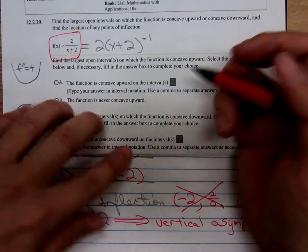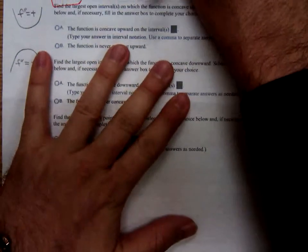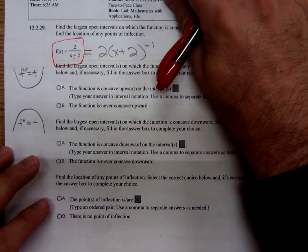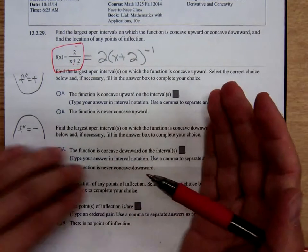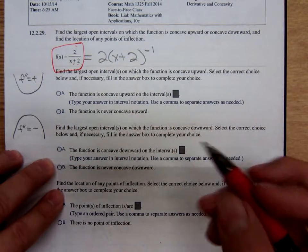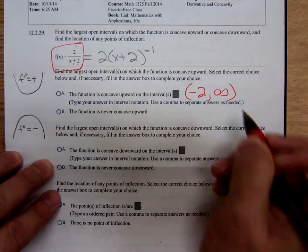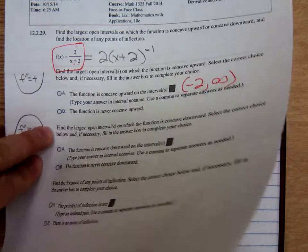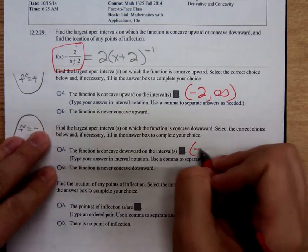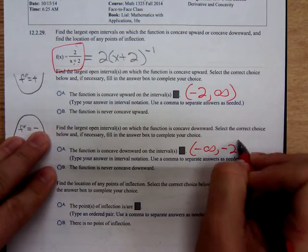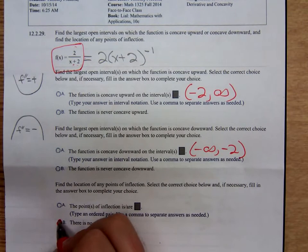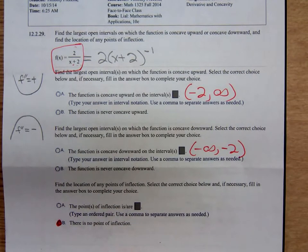So, concave upward, I may as well write all the answers here on the statement of the problem. It was concave upward from negative 2 to infinity. The graph was concave downward from negative infinity to negative 2. And we choose response B. There is no point of inflection.